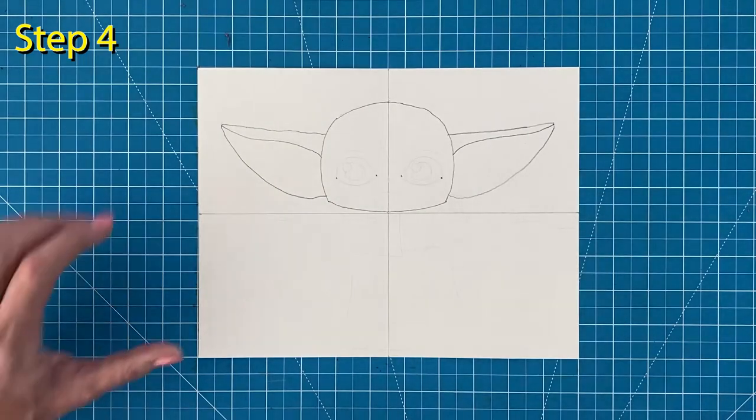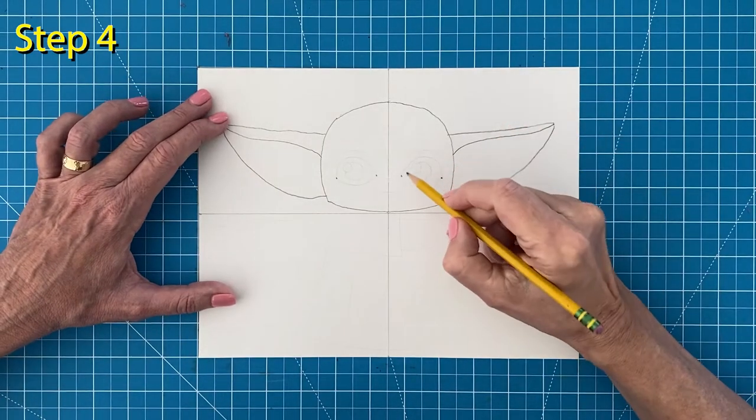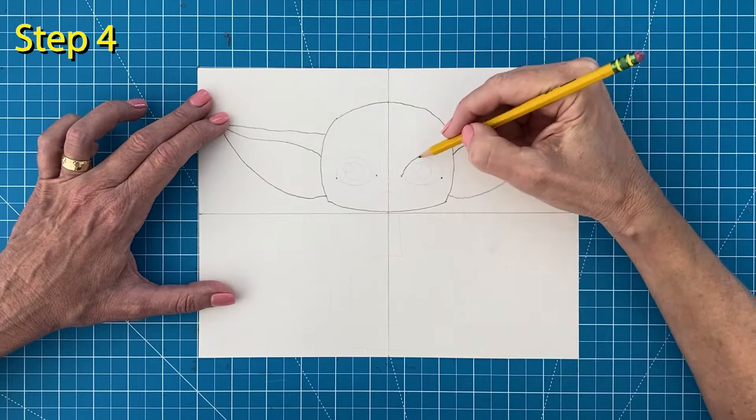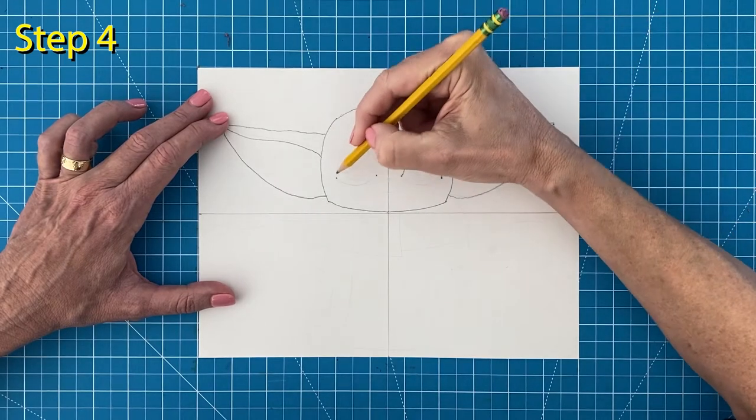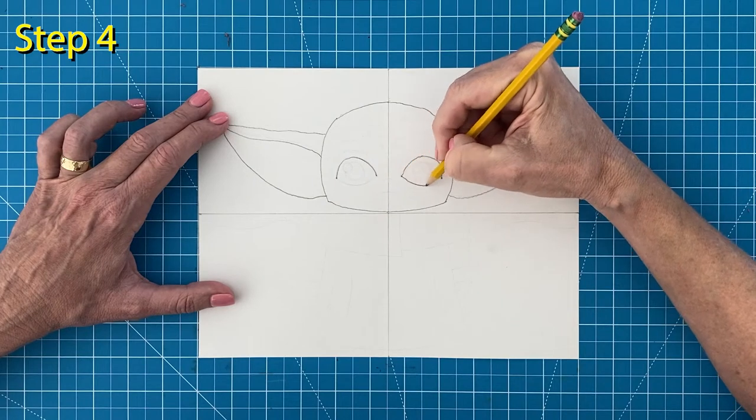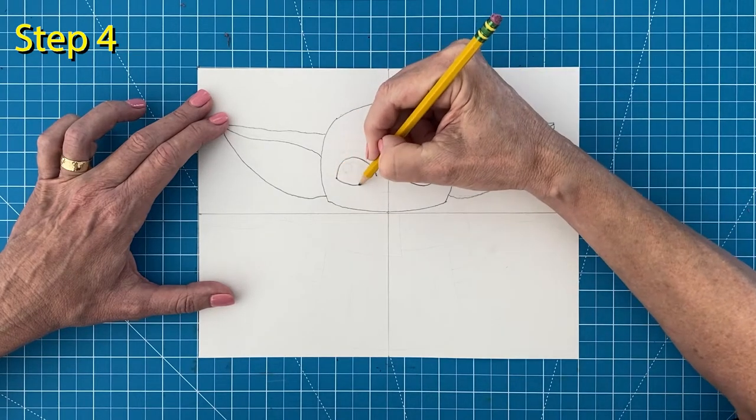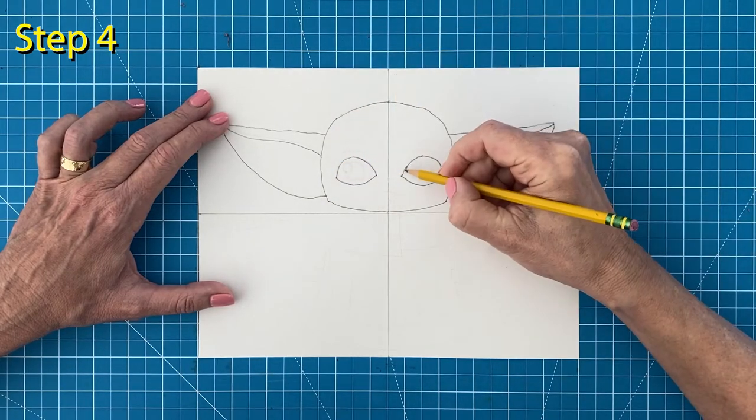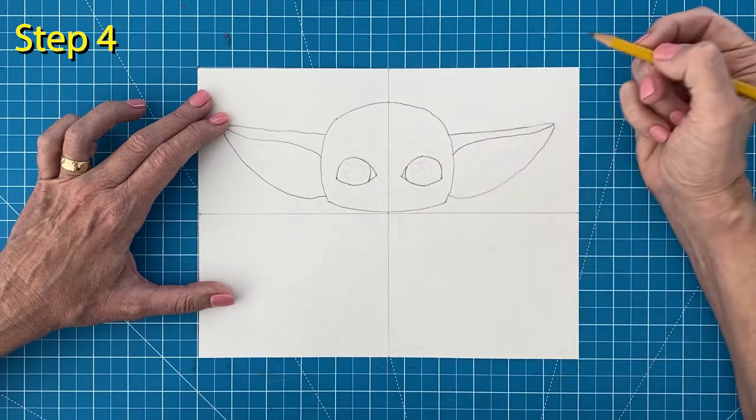Step number four, draw the eyes by connecting the dots with a large curve on top. Connect with a smaller curve below. Draw the inside line for the iris and then circles for the pupils.